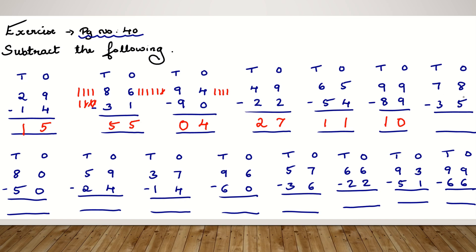78 minus 35 is 8 minus 5. Use your fingers. It is 3. 7 minus 3 is 43.